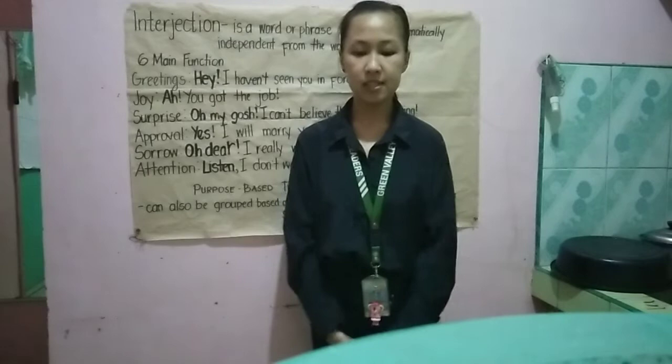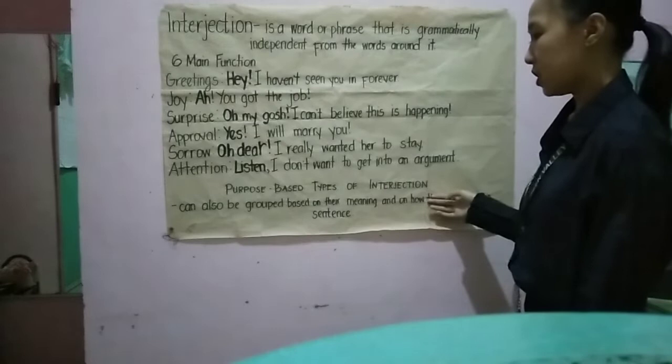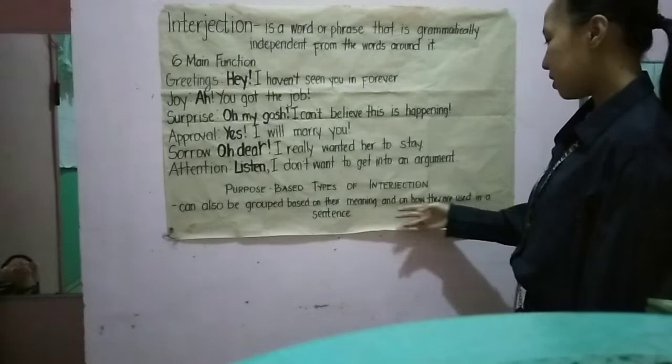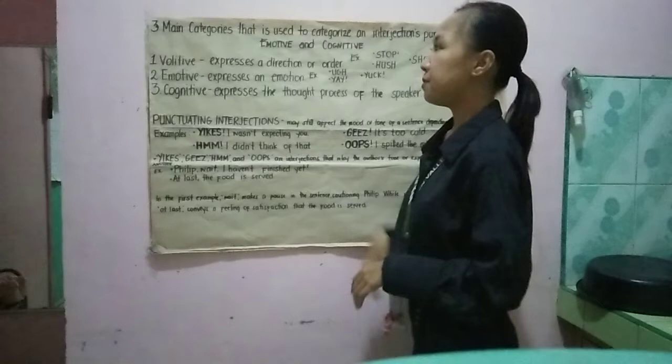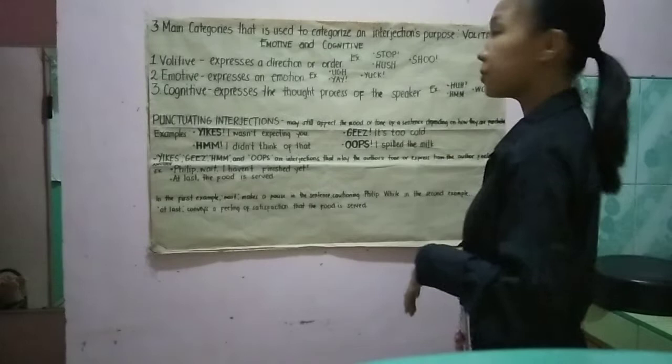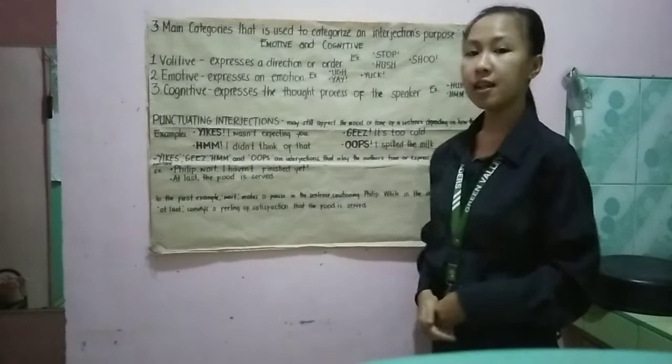Now let's proceed to the purpose-based types of interjection. They can also be grouped based on their meaning and on how they are used in a sentence. Now let's proceed to the three categories of interjection used to categorize an interjection's purpose. Number one, we have VOLITIVE; number two, we have EMOTIVE; and lastly, we have COGNITIVE.